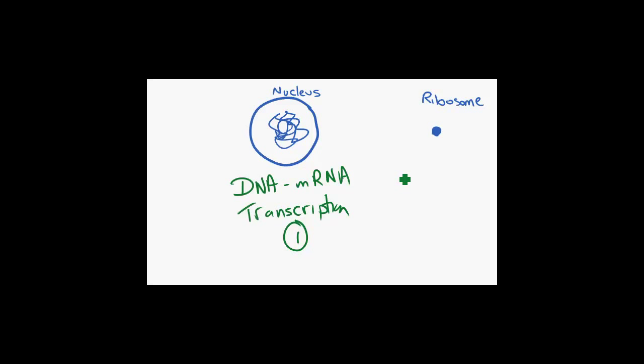The second step is where we build a protein from the information on the messenger RNA, which occurs in the ribosome. This is called translation, and it is the second step.